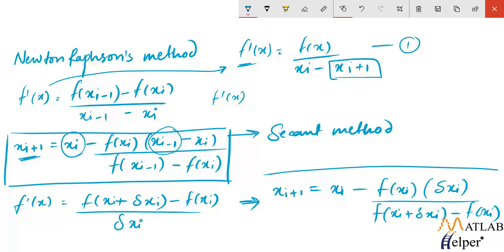...so this is the modified formula which has no arbitrary initialized variables and this formula is used in the modified secant method to find out the root.